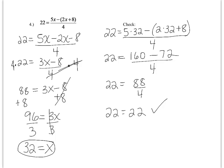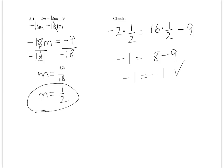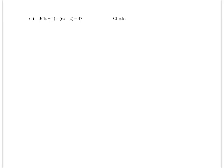Try the next one on your own and then tune back in to make sure you did it right. For problem 5, you should have gotten m = 1/2, and both sides of your check should have given you −1. Helpful hint: you didn't have to do any simplifying — you just had to collect. The smart move when collecting is to subtract 16m from both sides. If you add 2m to both sides instead, you'll have 0 = 18m − 9 and some extra steps. So I subtracted 16m, got −18m, divided both sides by −18 — a negative over negative is positive — and reduced the fraction 9/18.